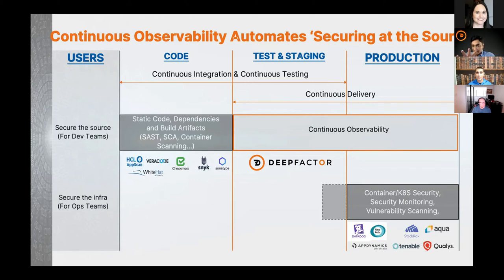If you think of continuous observability in the context of your DevOps pipeline, the way to summarize it is: CI lets you build fast, CD lets you deploy fast, continuous testing lets you find functionality bugs fast, and continuous observability helps you find security and compliance issues fast. That's the framework we've laid out.